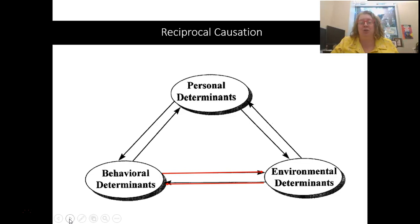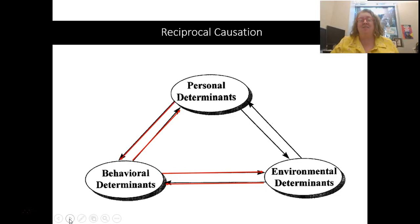Personal determinants — those mental processes — also affect our behavior and our environment. Our behavior determines how we feel. So if I do really well on a math test, I'm going to feel better about my math. I start to have self-efficacy. When I do better and feel good about math, I want to do math more, so that builds upon each other. Feeling good about doing something increases that behavior.